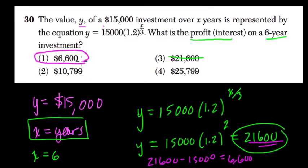So here the answer is 1, $6,600. If they had asked how much do you now have in the bank, then I would circle $21,600. But they want to know what the profit was. So just be careful. Take your time on these types of questions. Hope that helped.